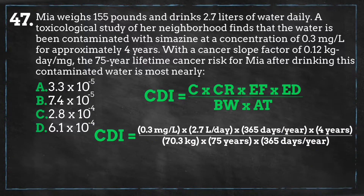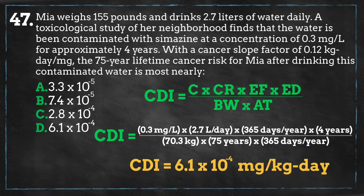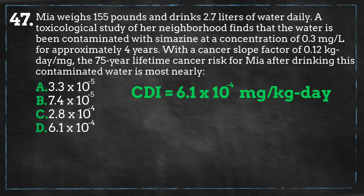So let's put our information into this equation. The only change I had to make is the conversion of Mia's body weight from pounds to kilograms, which equals 70.3 kilograms. We can proceed with solving the equation and we get a chronic daily intake rate of 6.1 times 10 to the minus 4 milligrams per kilogram day.